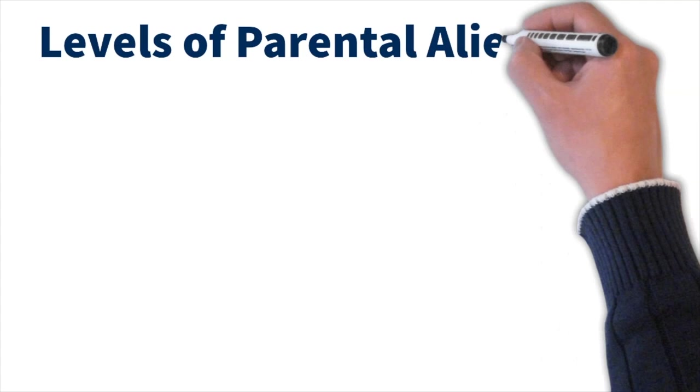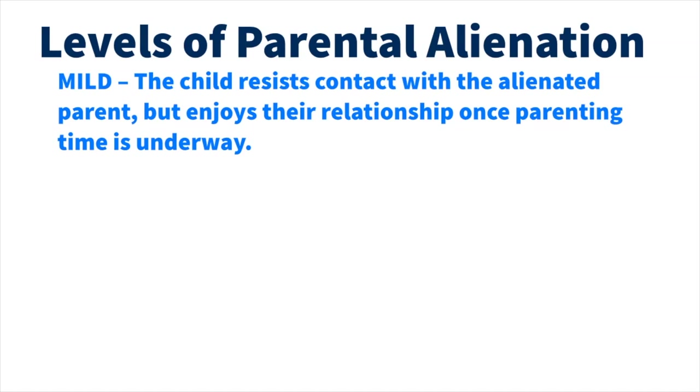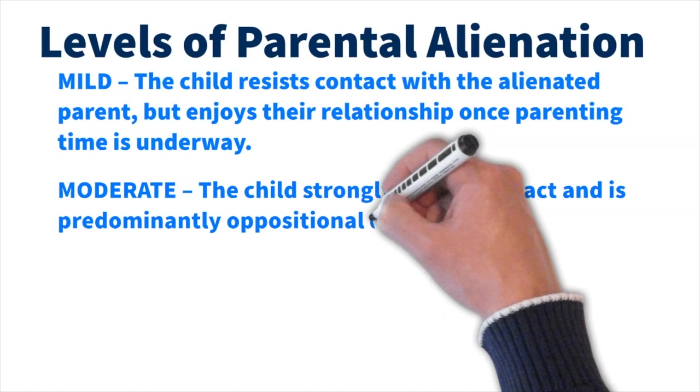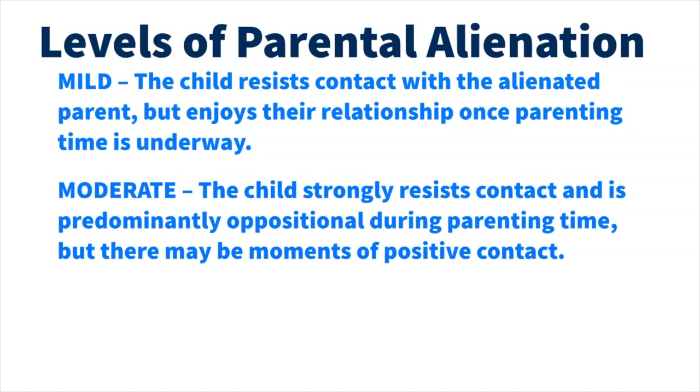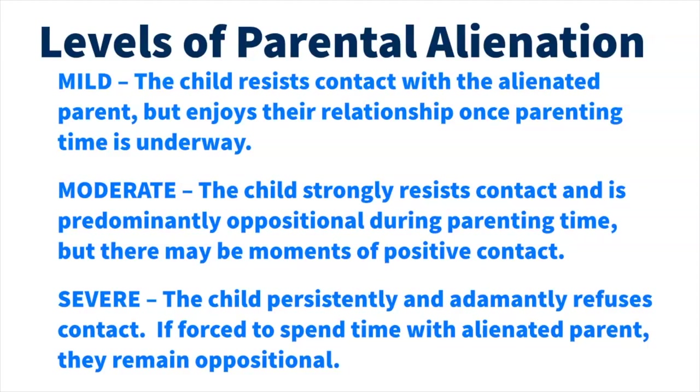Let's look at the three stages of alienation and some examples of each. Mild, the child resists contact with the alienated parent but enjoys their relationship once parenting time is underway. Moderate, the child strongly resists contact and is predominantly oppositional during parenting time, but there may be moments of positive contact. Severe, the child persistently and adamantly refuses contact. If forced to spend time with the alienated parent, they remain oppositional.